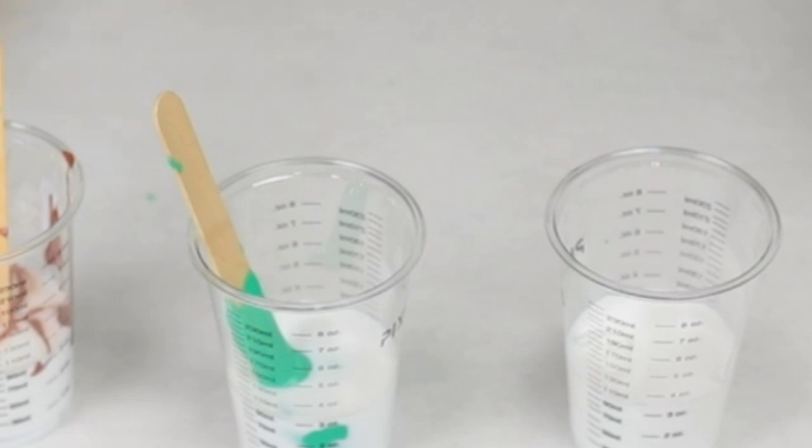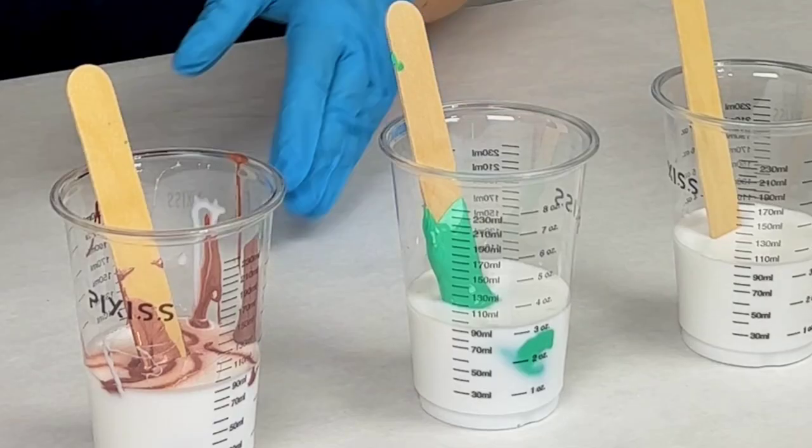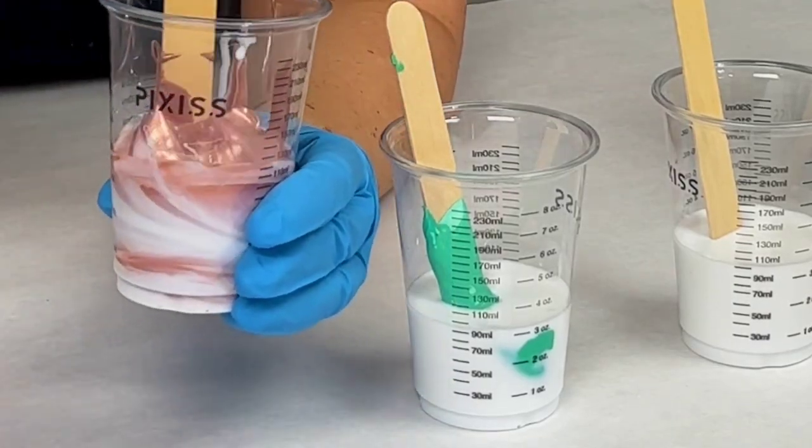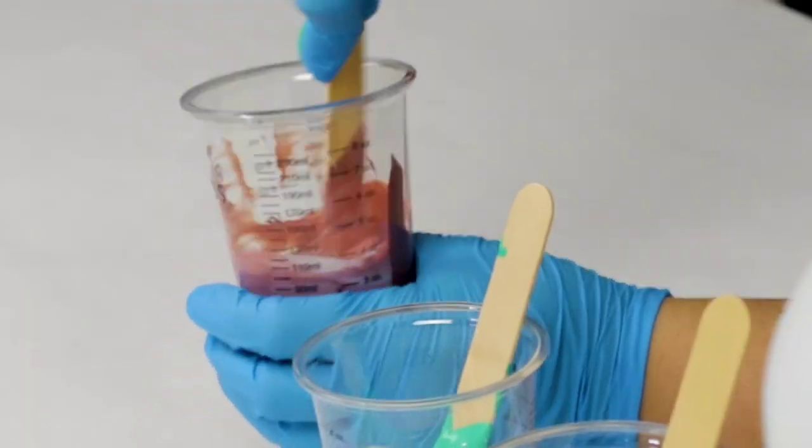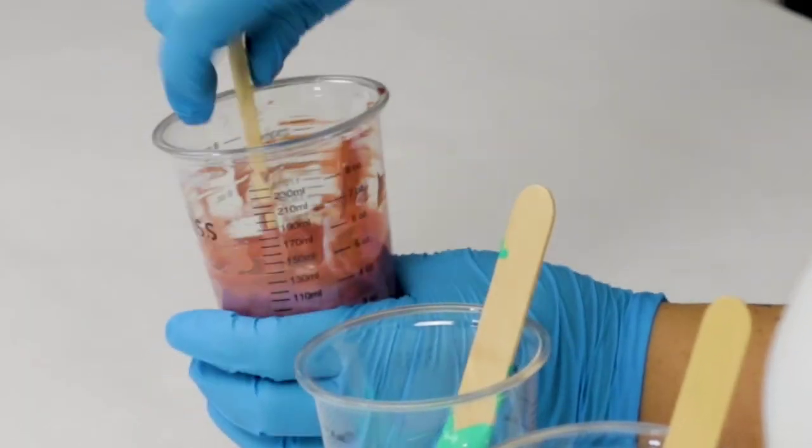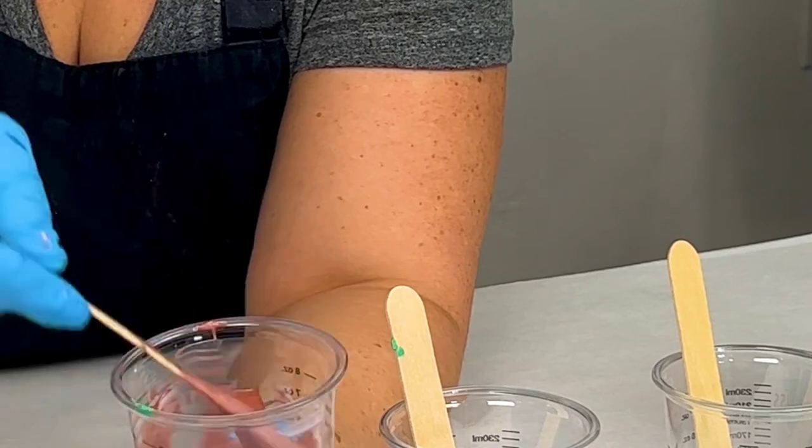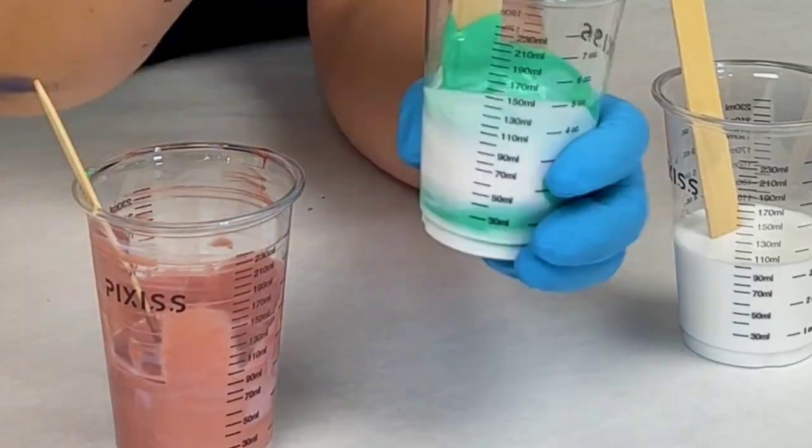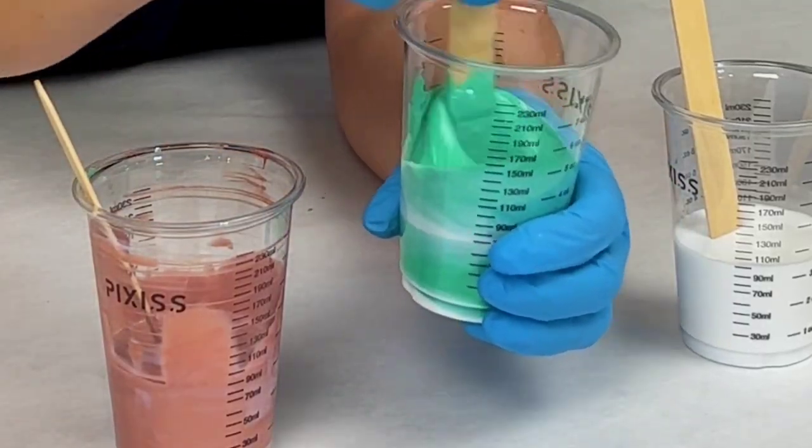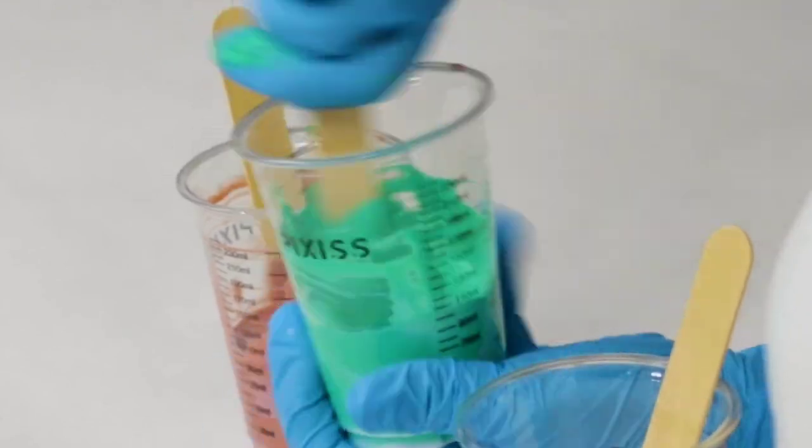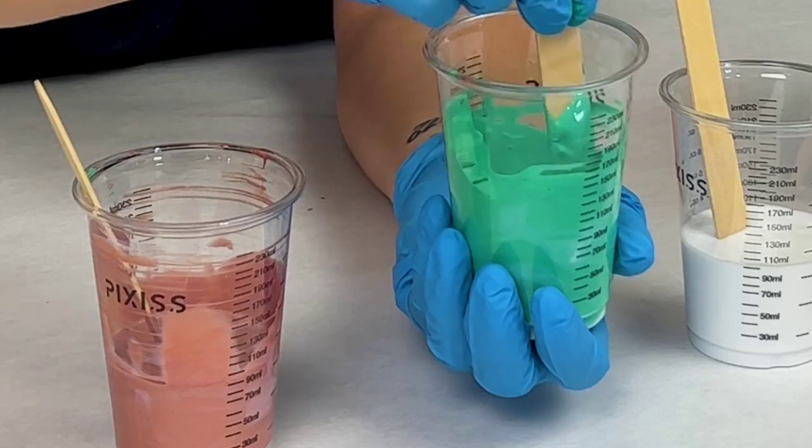I mix these with two thirds pouring medium to one third paint, and I always start off with that ratio. You may have noticed I put the pouring medium in the cup first. That's because it's the thinner of the two and it helps to get an easier mix. And then I stir those together completely.